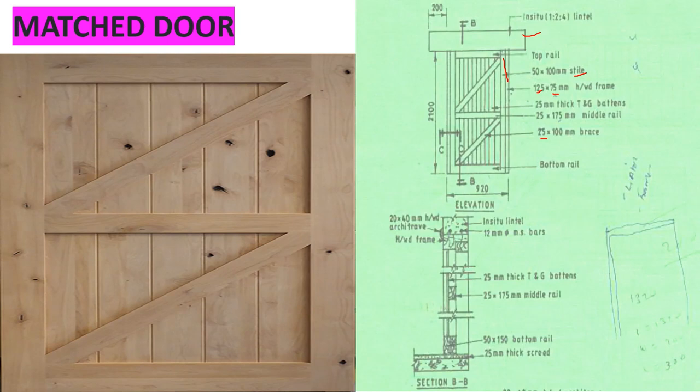And then on the section, this is how our door looks like. So we want to find the quantities of those doors. We want to take off the quantity. We have been told the height of the door is 2100 and then the width is 920.